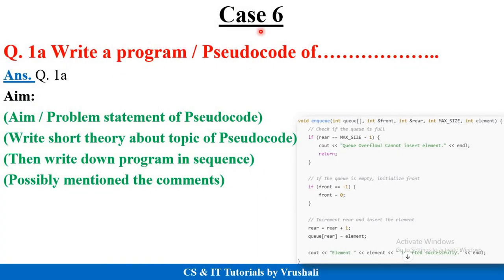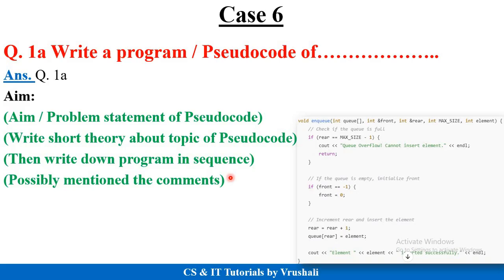Suppose the question is 'write a pseudocode.' Pseudocode means just the logic of that program. For example, if the exam asks for the pseudocode of enqueue insertion operation in a linear queue, first write down the problem statement — for example, 'insertion in a circular queue' — then write some short theory about the topic, because such questions are generally for 8 to 9 marks. Then write down the pseudocode with the logic of that particular operation. For subjects like OOP, if they ask to write a Java program, write a complete program from header files to end. In pseudocode, write only the logic.